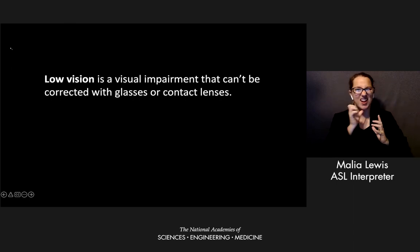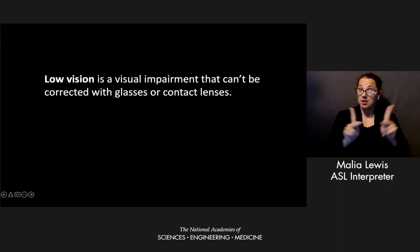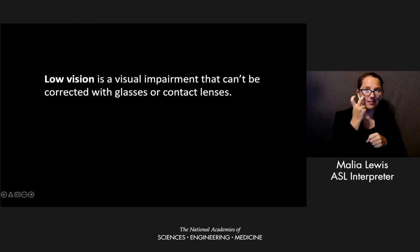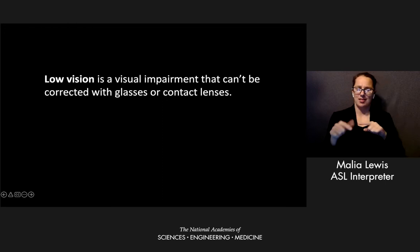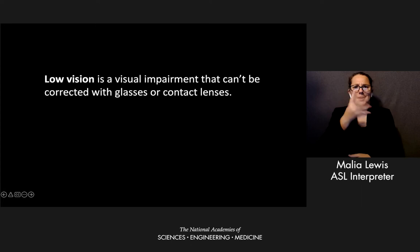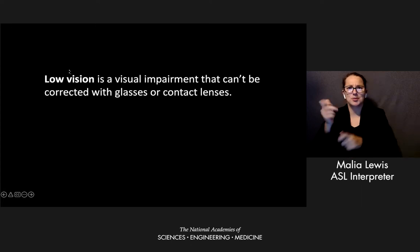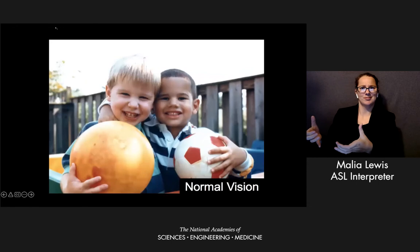Most people with visual impairments do have some vision — they're not fully blind. And yet this category of low vision is largely ignored in the research literature and also in life in general. It's a fairly invisible disability.